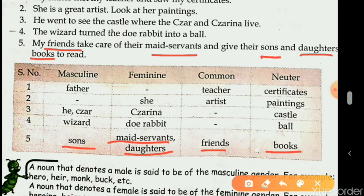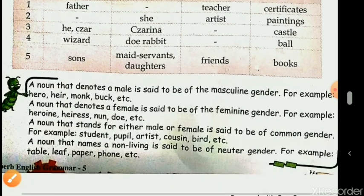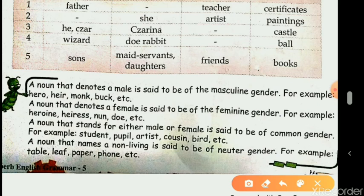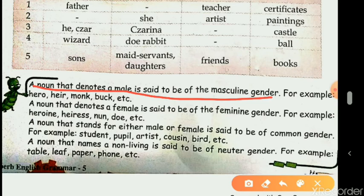I hope this is clear. Now let's read the definitions with examples. Masculine gender: a noun that denotes a male is said to be of the masculine gender. Examples: father, brother, grandfather, hero, monk, buck — all examples of masculine gender, referring to males or male animals.